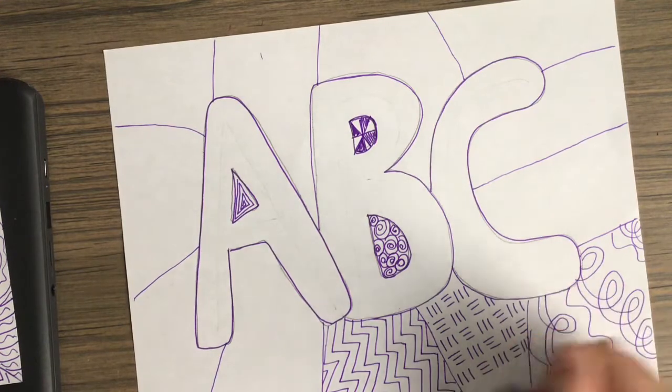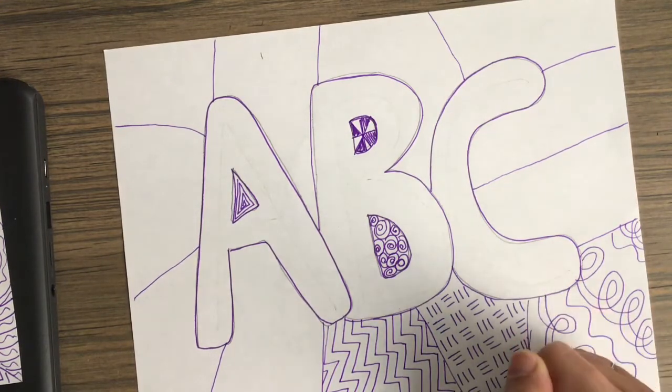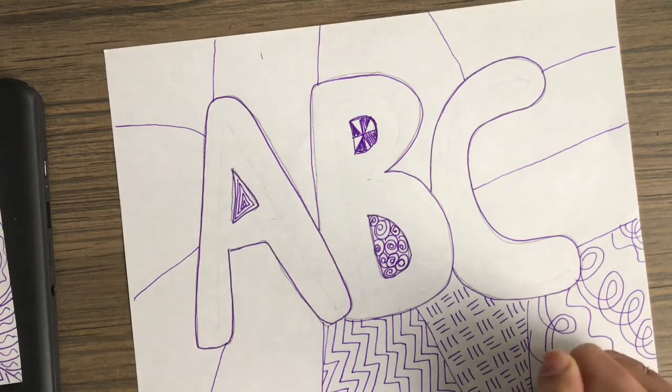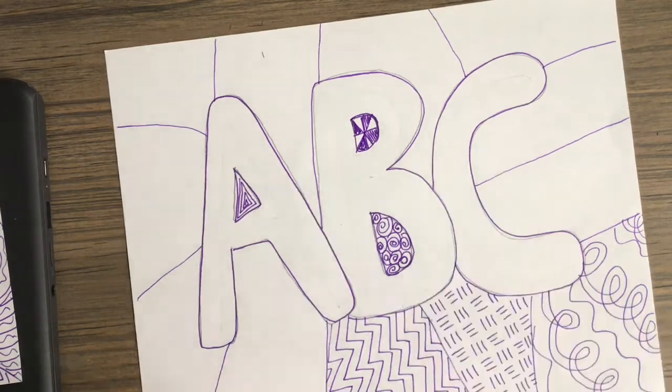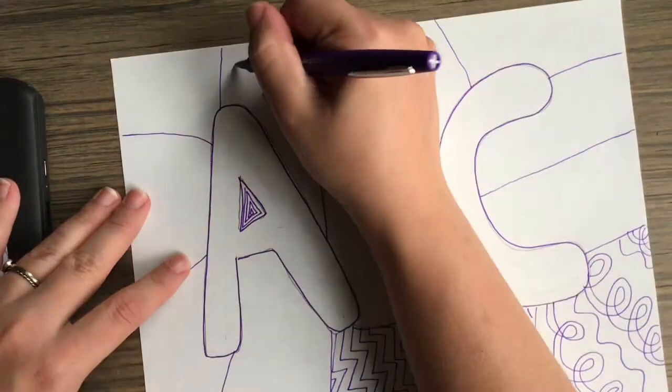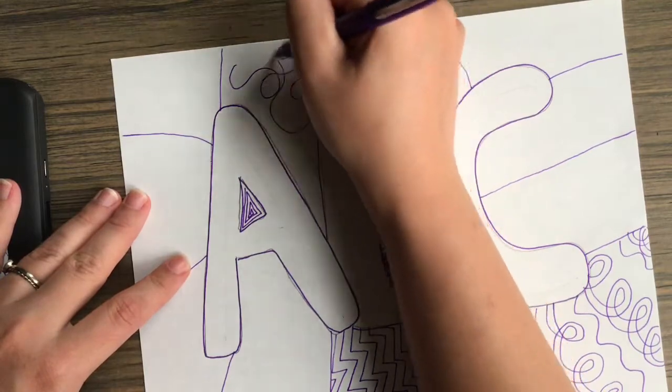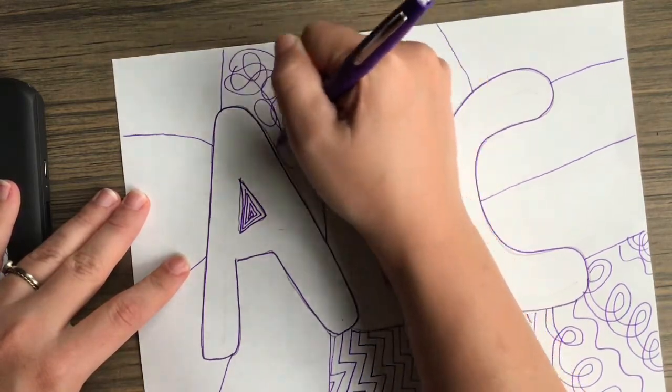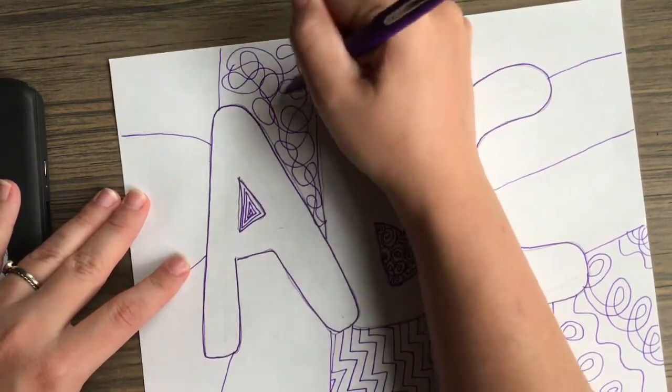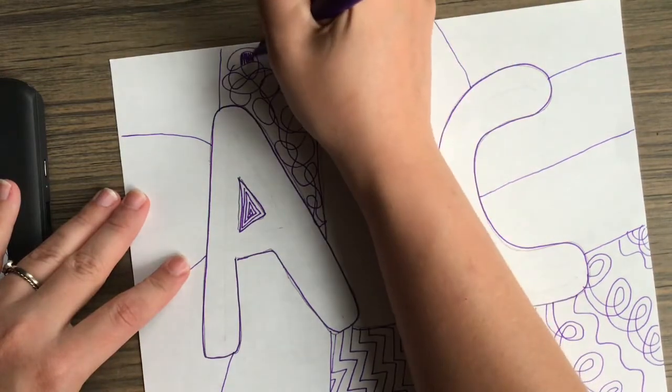The one I'm drawing right now actually reminds me of the texture on a dodgeball if you ever looked at one really up close. Really the only wrong way to Zentangle is just to scribble scrabble. Right now I'm doing a slow motion scribble scrabble, which is the only okay way to scribble during Zentangle.